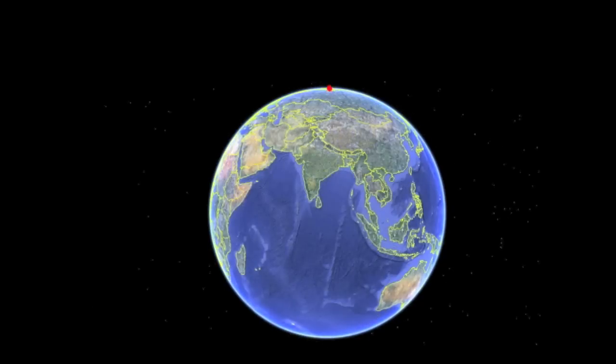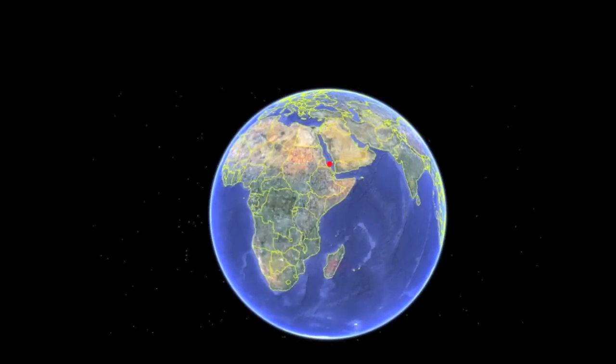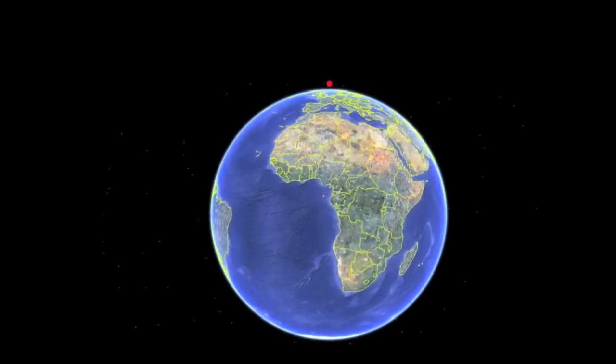Each orbit may take about an hour and a half. As they orbit, the Earth is turning beneath them, so over the course of 24 hours they can examine the whole of the Earth's surface.